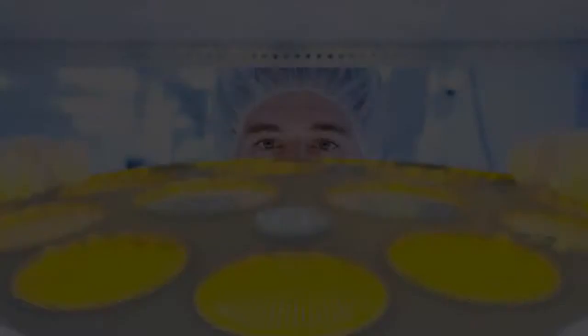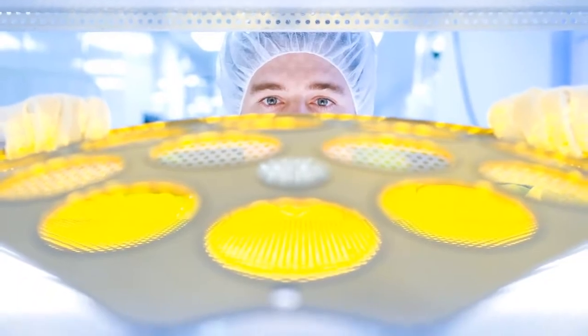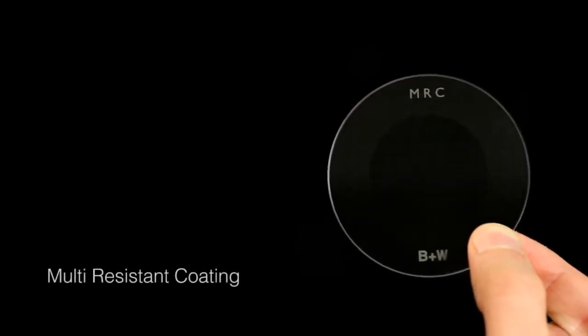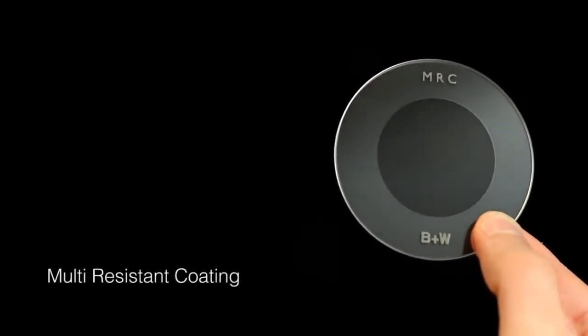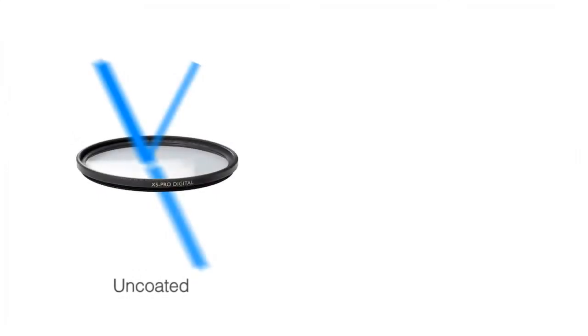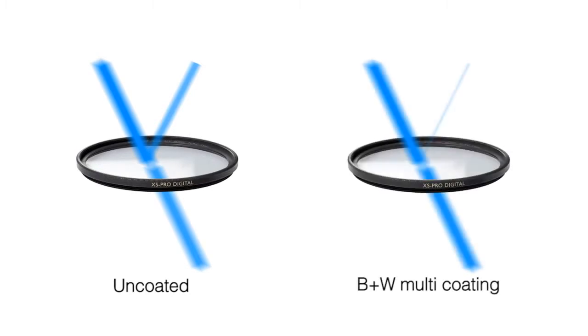A crucial step in the production is the filter's multi-resistant coating, which ensures minimal reflection and eliminates stray light. An untreated filter may reflect up to 9% of incoming light, but with B Plus W multi-resistant coating, light loss is minimal and almost 100% of the light can pass through.